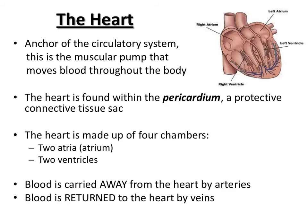I'll start with the heart. The heart is the anchor of your circulatory system — a muscular pump that pushes your blood through your body. It's found within a protective sac called the pericardium, which is really easy to see in your dissection. It's a tough tissue pouch that surrounds the heart. You might not even realize it's there, but once we rip it open it'll be clear that it was wrapping it up.